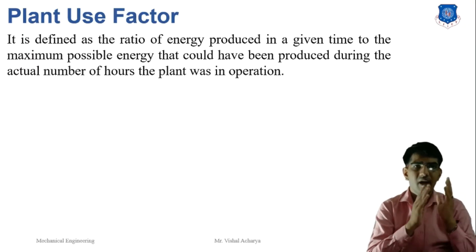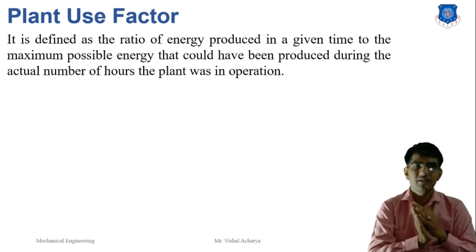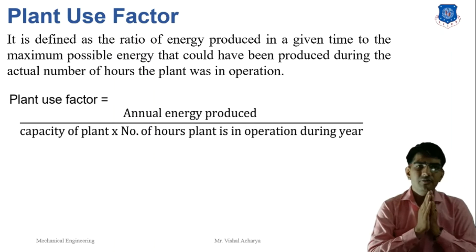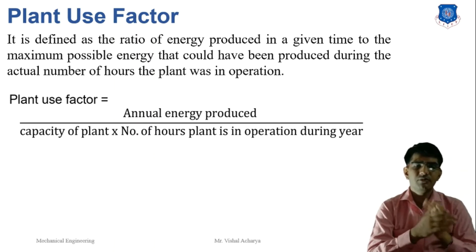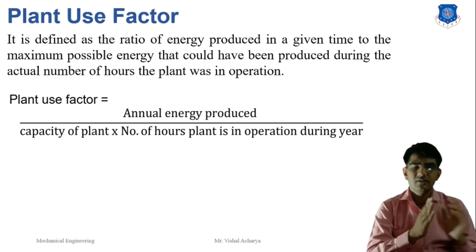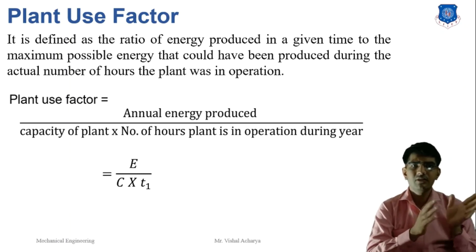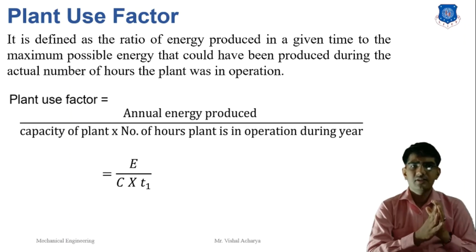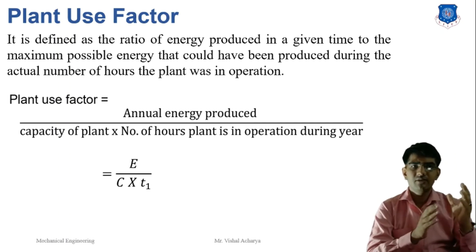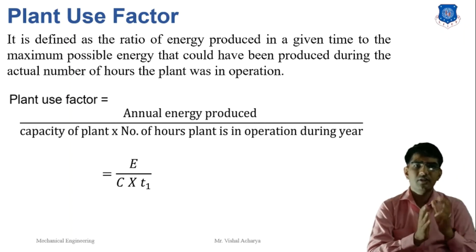The next term is the plant use factor. It is defined as the ratio of the energy produced in a given time to the maximum possible energy that could have been produced during the actual number of hours the plant was in operation. Plant use factor = annual energy produced (E) / (plant capacity (C) × number of hours plant operated during the year (T)). For example, if total energy produced is 10,000, plant capacity is 20, and hours of operation are 1000, then plant use factor = 10,000 / (20 × 1000) = 0.5.